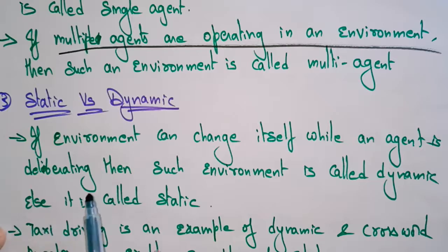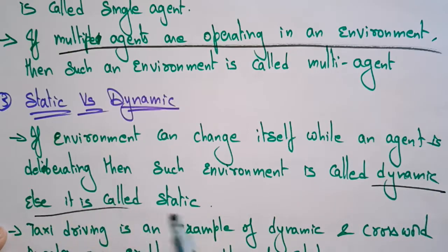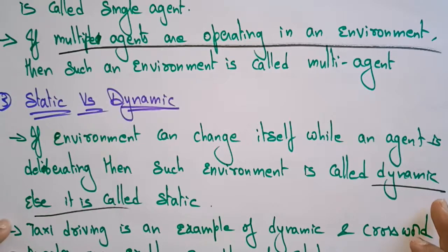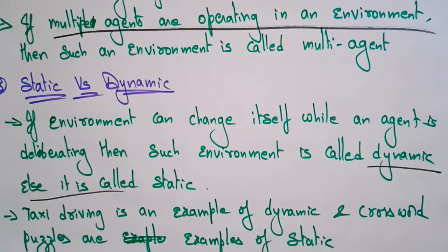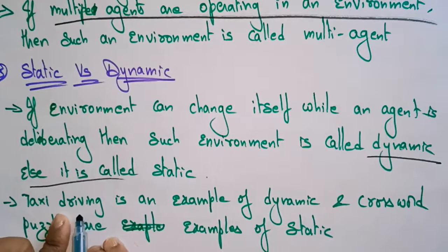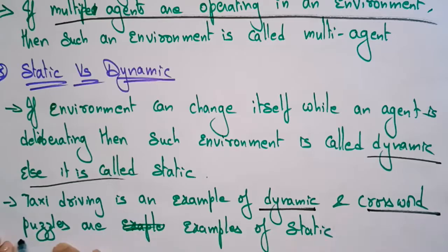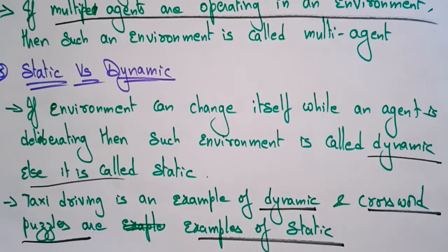Static versus dynamic: if the environment can change itself while an agent is deliberating, then such an environment is called dynamic. Otherwise, it is static. For example, taxi driving is an example of a dynamic environment — it is based on traffic situations and may increase or decrease the car speed, so the environment changes itself while the agent is deliberating. A crossword puzzle is an example of a static environment, as it is a fixed one.